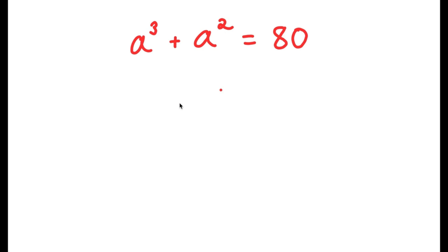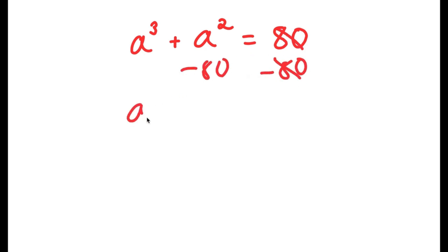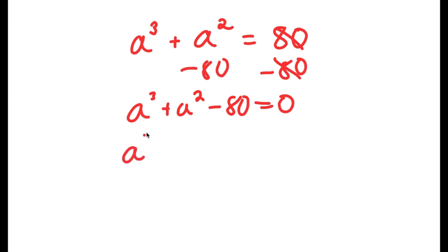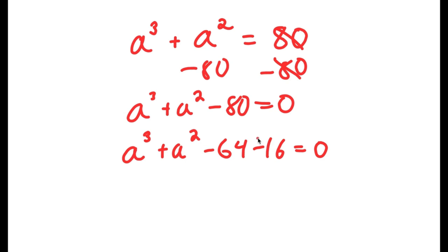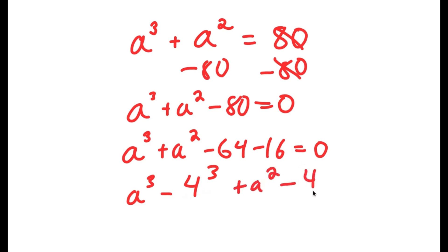In this problem, I have a to the power of 3 plus a squared is equal to 80. To solve this, I'm going to start by subtracting 80 on both sides, so I get a cubed plus a squared minus 80 equals 0. Now I'm going to rewrite this as a cubed plus a squared minus 64 minus 16 equals 0, writing negative 80 as negative 64 minus 16. And negative 64 I'll rewrite as negative 4 to the power of 3.